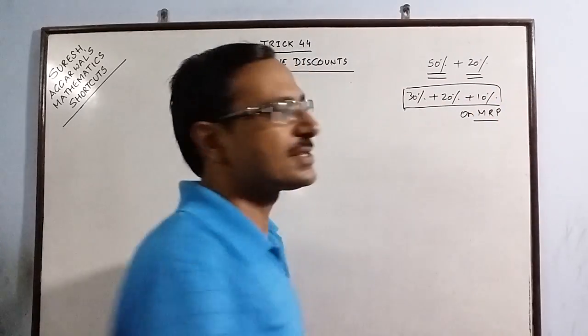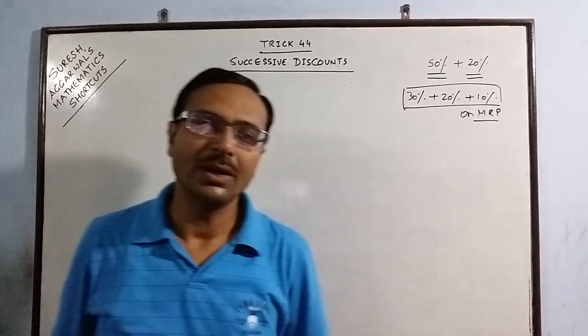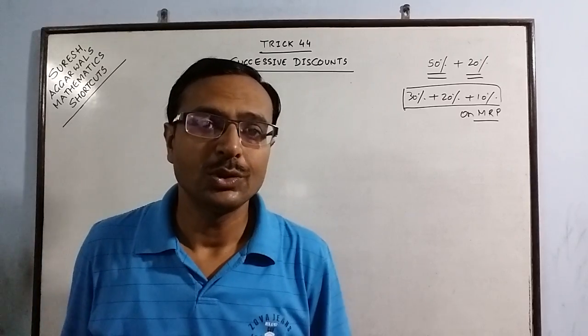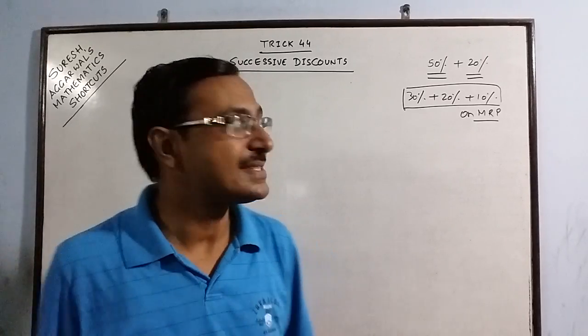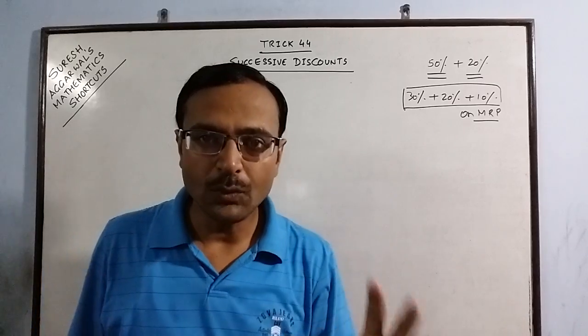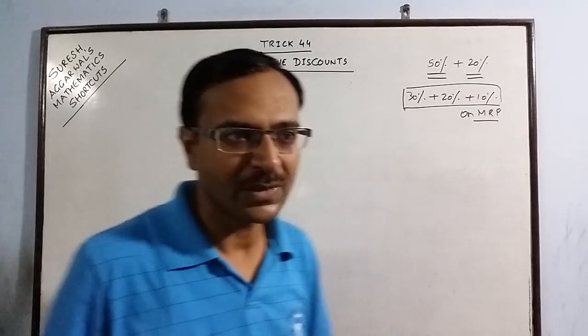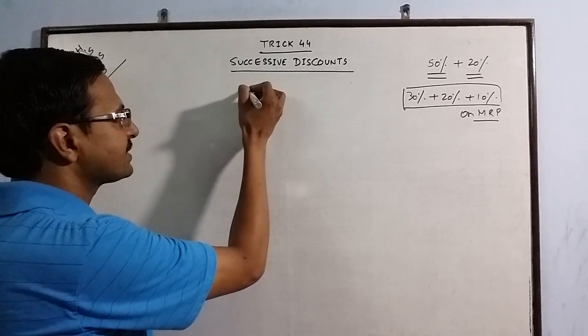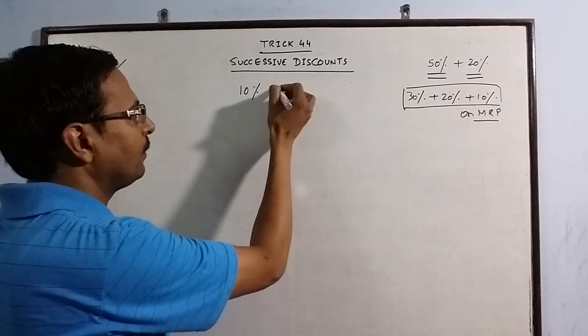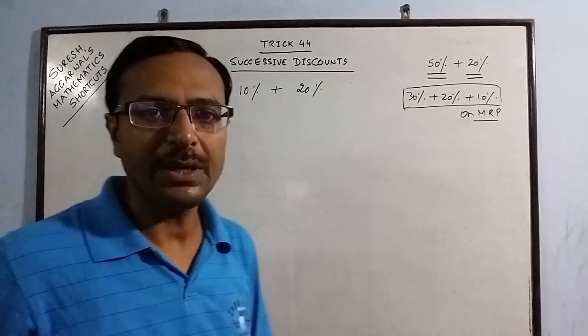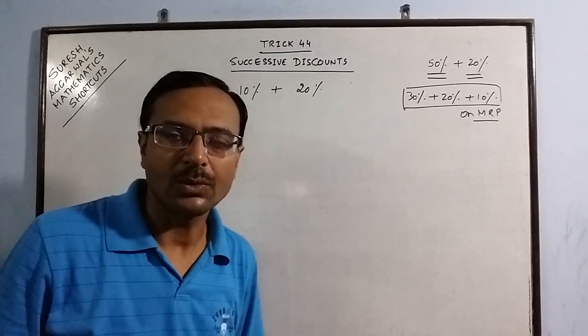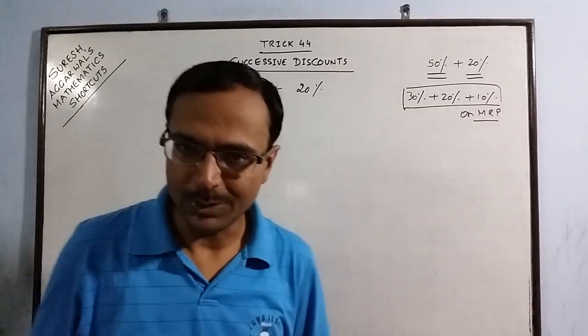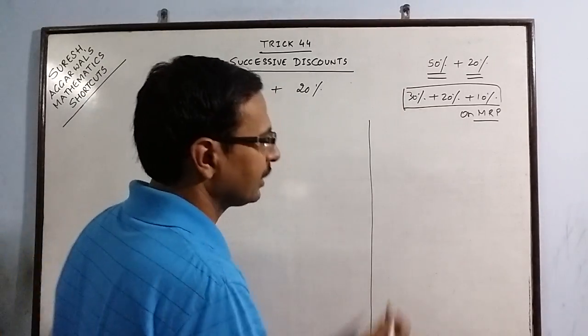These 3 discounts when added together seems like 60% of MRP, but actual situation is that it is less than 60%. So today we are going to do some methods through which we can calculate a single discount which is equivalent to 2 or more given discounts. For illustrating this, let me take a simple example wherein you are given a discount of 10% plus 20% on the MRP of an item. I want to find a single discount which is equivalent to this. There are 3 basic methods through which I can do this. I am going to illustrate this through all the 3 methods.